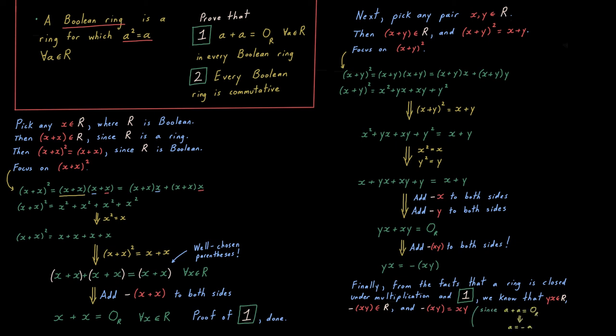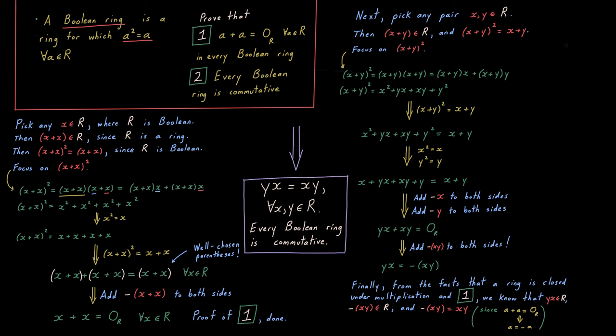So if negative XY is in our ring, then negative XY has to be positive XY. And so we have proven commutativity in one easy swoop here. YX equals XY for all XY in our ring. Every Boolean ring is commutative.